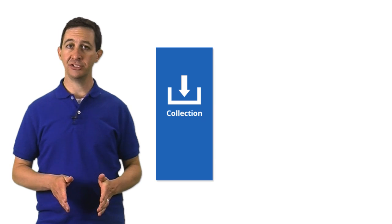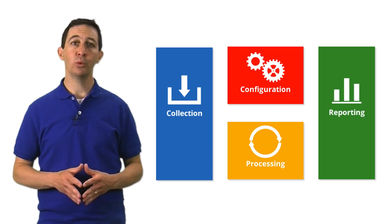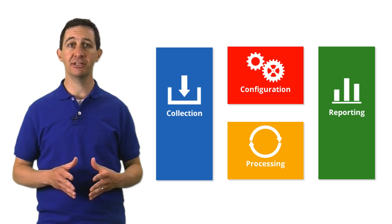There are four main components to the Google Analytics system: the data collection, the configuration, the data processing, and reporting. We will review each of these components in detail and how they work together to generate the data you need.